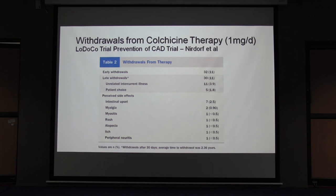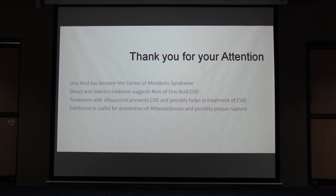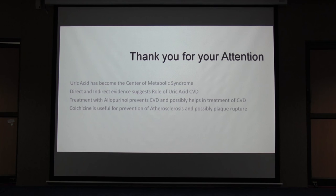To conclude: uric acid has become the center of metabolic syndrome. Direct and indirect evidence suggests a role of uric acid in coronary vascular disease. Treatment with allopurinol prevents CVD and possibly helps in treatment of CVD. Colchicine is useful in prevention of atherosclerosis and possibly plaque rupture. These two old drugs, available for more than half a century, are now possibly at the center of the stage. Thank you very much.